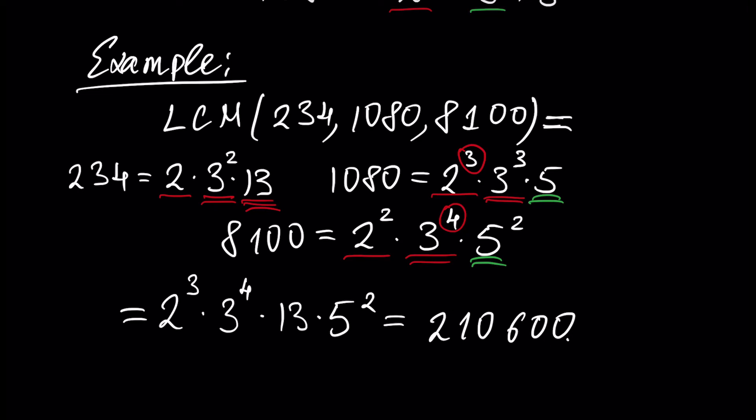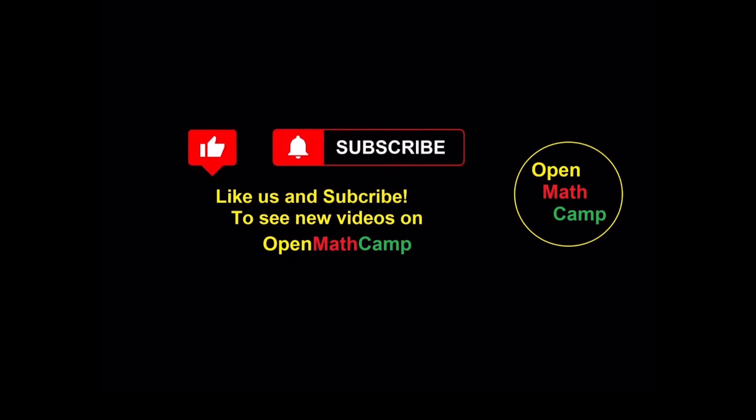And this number, 210600, will be the least common multiple of our three numbers. That was everything I wanted to talk about for this tutorial. Thank you very much. Like us and subscribe to see new videos on OpenMathCamp.